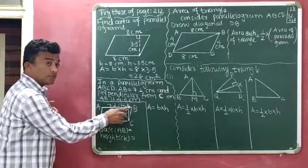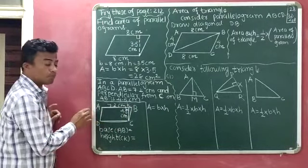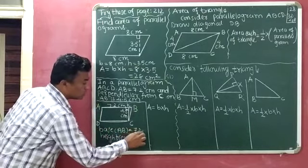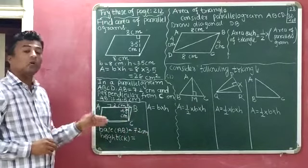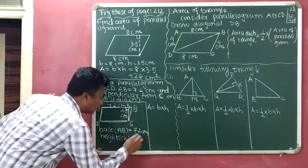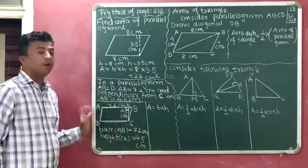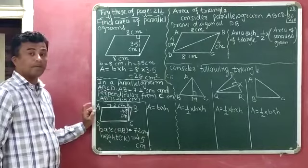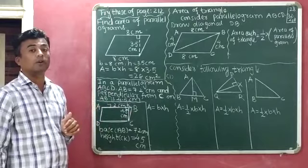AB is the base of the parallelogram and its length is 7.2 cm. CK is the height or altitude of the parallelogram and its length is 4.5 cm. Now we have the base and height, so we can easily find the area of parallelogram ABCD.